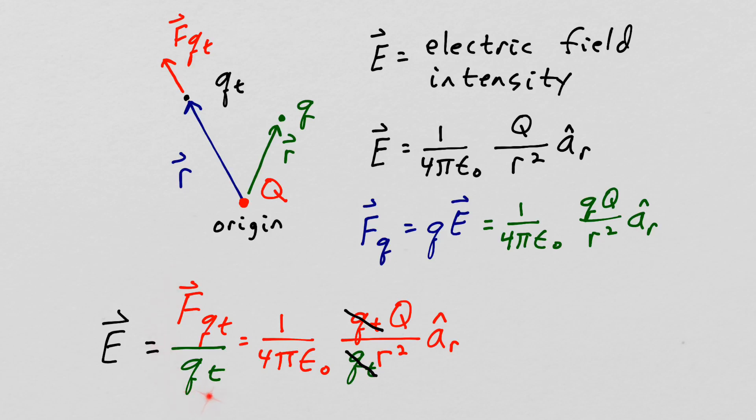So the electric field intensity is a force per unit charge, so the units would be newtons per coulomb.